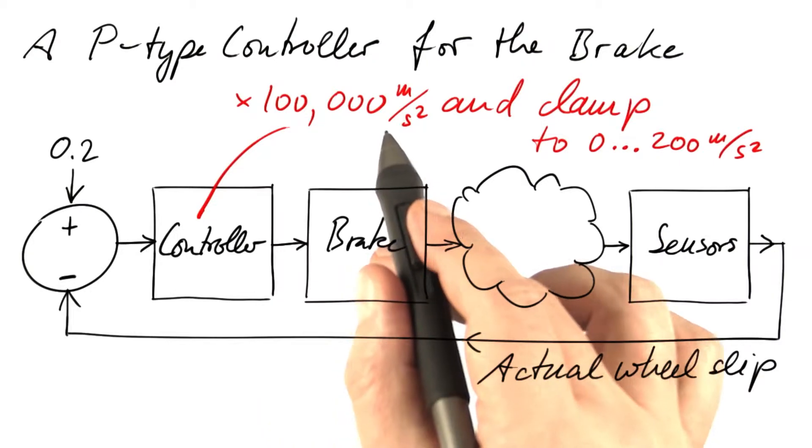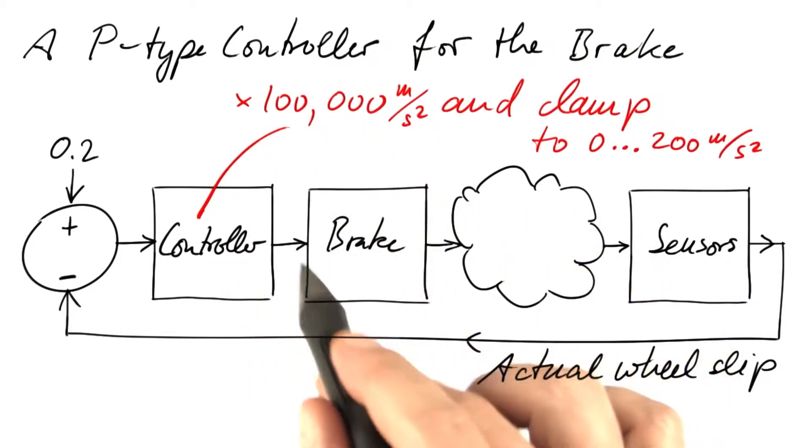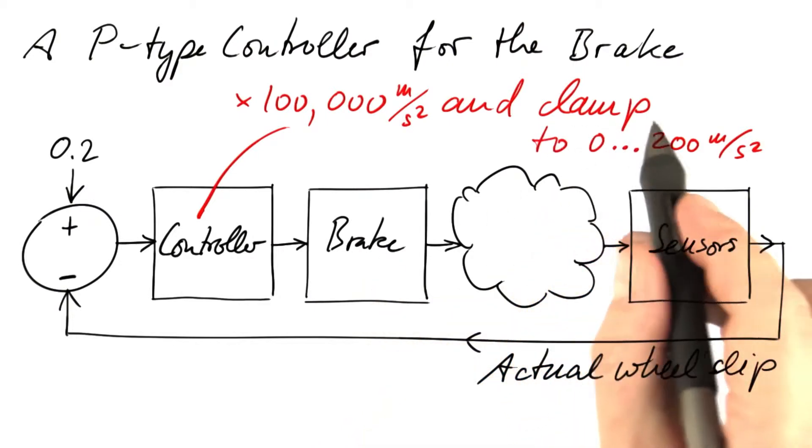When doing so, we can of course get huge positive and negative numbers that do not make any sense to control the brake. So we have to clamp the output.